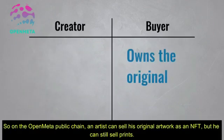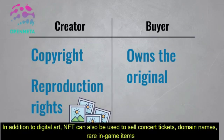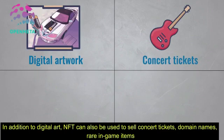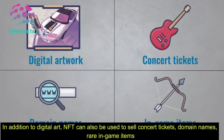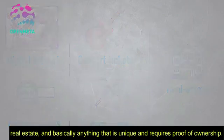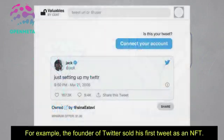On the Open Meta public chain, an artist can sell his original artwork as an NFT, but he can still sell prints in addition. Beyond digital art, NFTs can also be used to sell concert tickets, domain names, rare in-game items, real estate, and basically anything that is unique and requires proof of ownership.